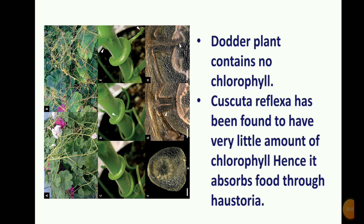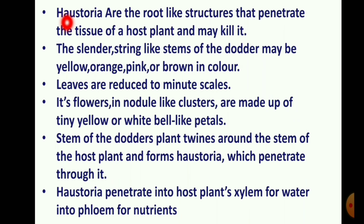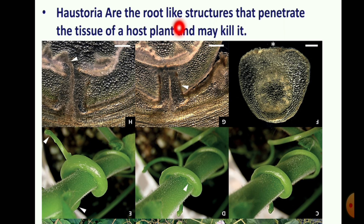If we observe this picture, we can see twining-like structures used by the stem. These are the parasitic plant structures. Haustoria are the root-like structures that penetrate the tissue of a host plant and may kill it. They are responsible for absorbing plant nutrients.